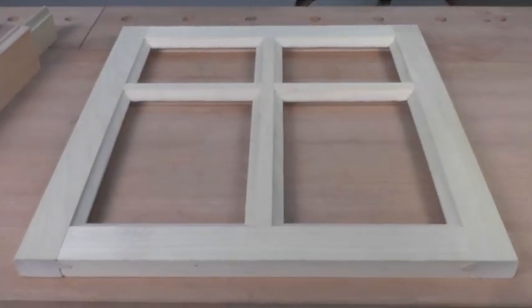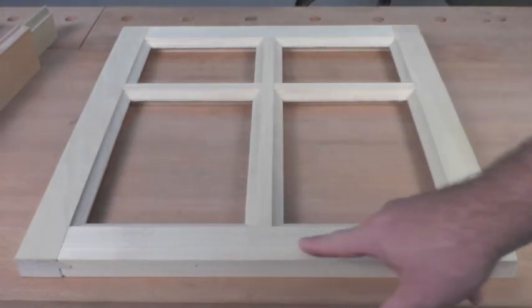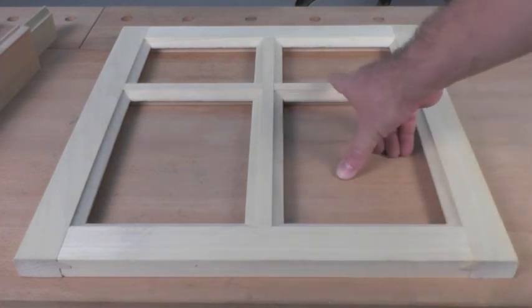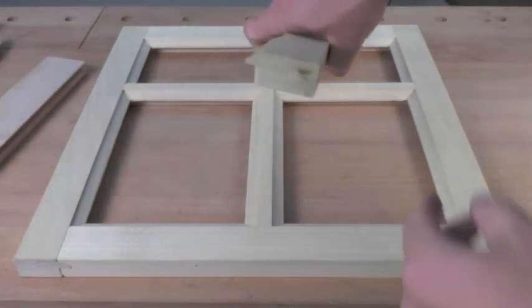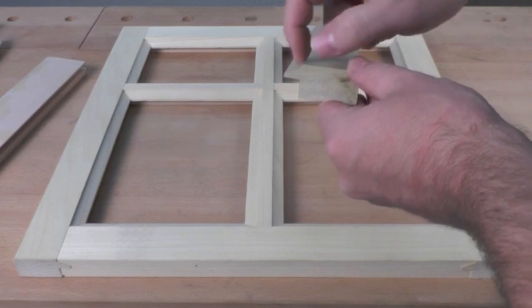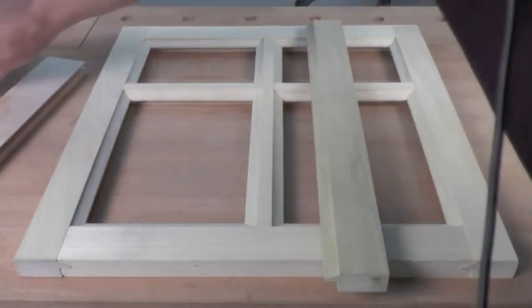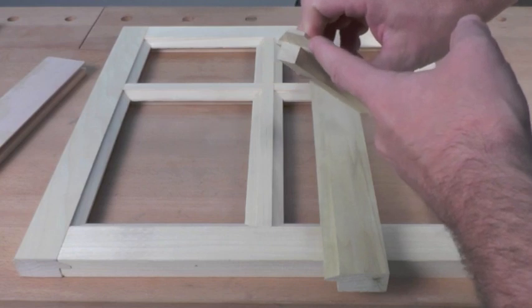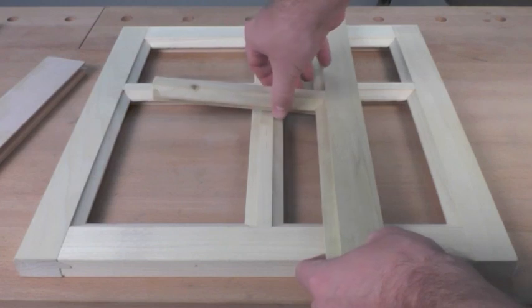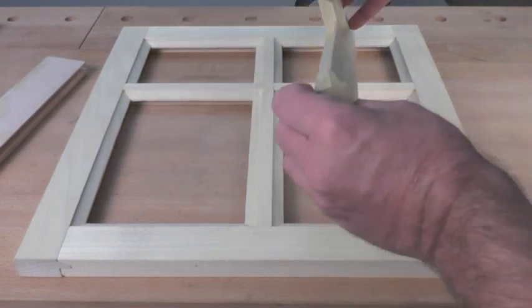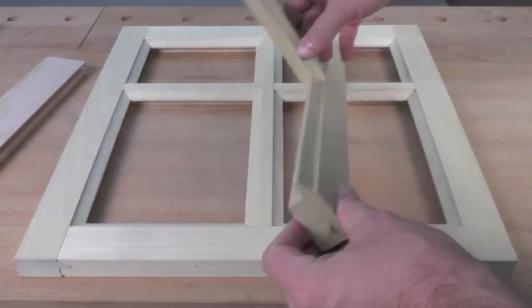So I want to talk really quickly about some of the terminology we're going to use. The vertical pieces are the styles. The horizontal pieces are the rails. The interior parts, we're going to use the term of divider or muntin. This will be referred to as the profile. And the interior edge part will be referred to as the cope. And the cope will insert onto the profile like that.